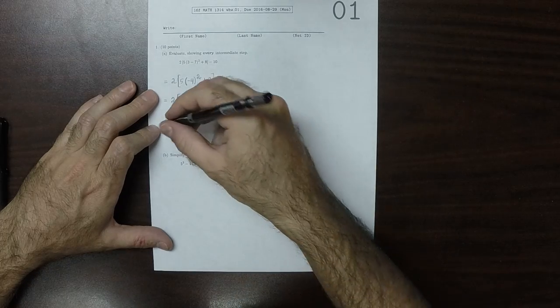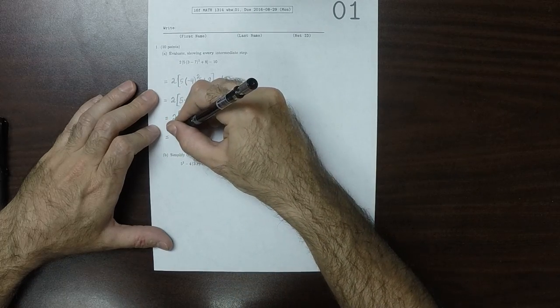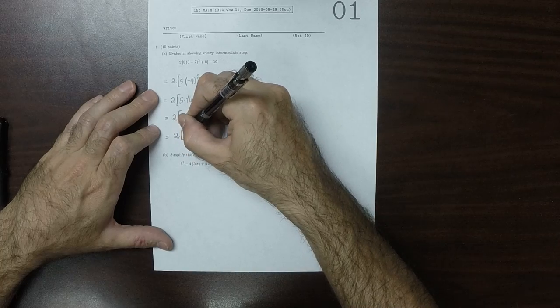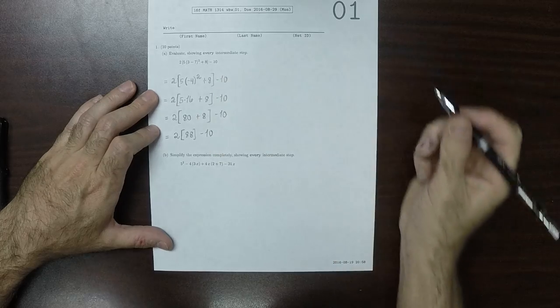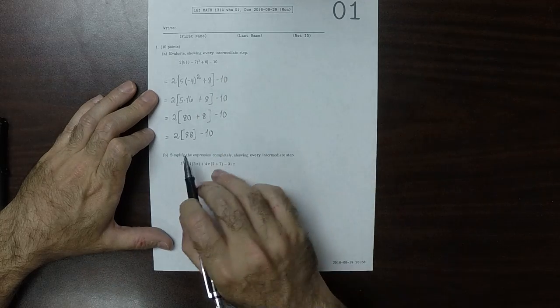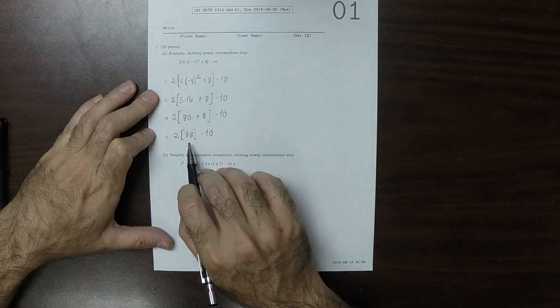So then 80 plus 8, well that's 88 minus 10, and so now these parenthesis there's nothing to do in them.